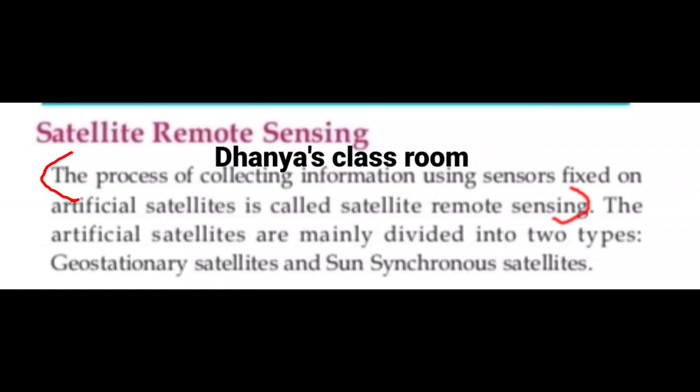The artificial satellites are mainly divided into two types: geostationary satellite and sun-synchronous satellite.